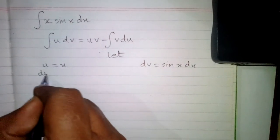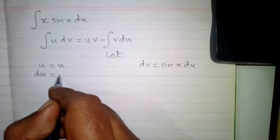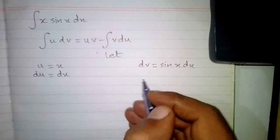Now the differential du equals the derivative of x which is 1 times dx, so du equals dx.